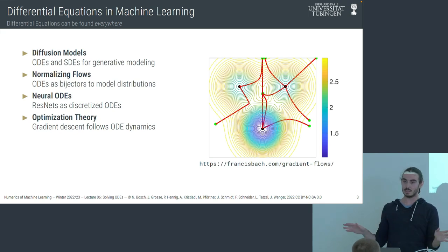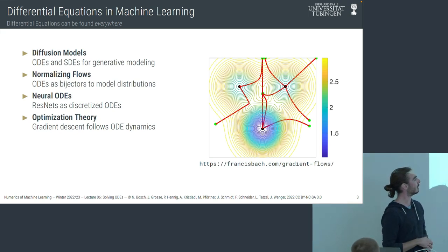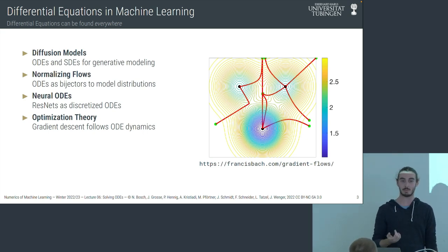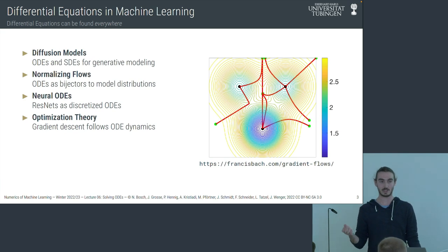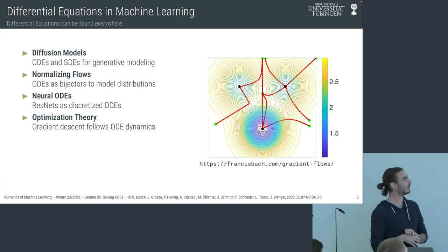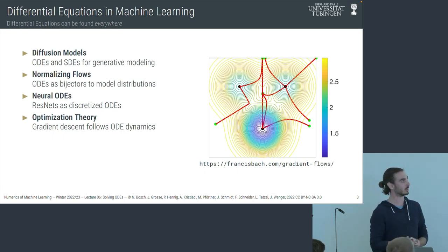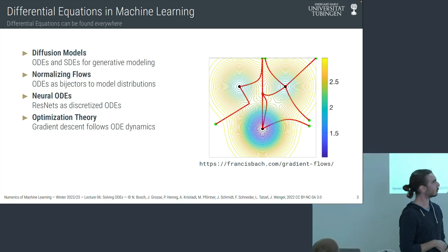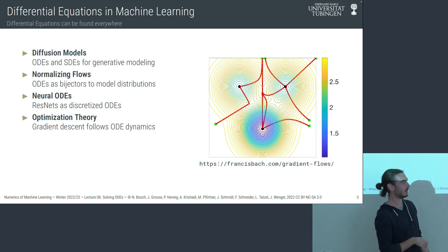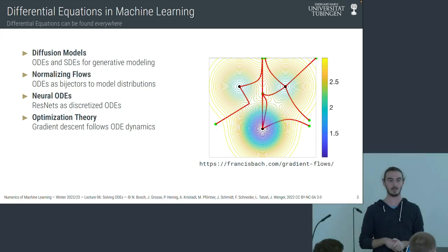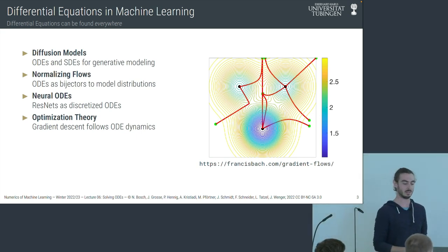To give something completely different, if you're more interested in optimization, it turns out that to understand what happens in gradient descent, you can do something similar to neural ODEs and reinterpret gradient descent as a discretization of a continuous object. This continuous thing is called a gradient flow. It's much easier to write a theorem about what the gradient flow does than what the discretized version does. Francis Bach has done a lot of great work on gradient flow, and he also extends this to SDEs and stochastic gradient descent.